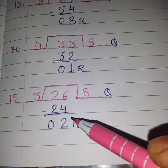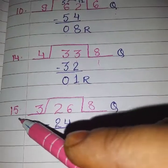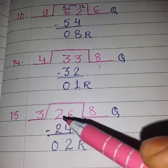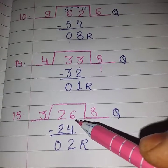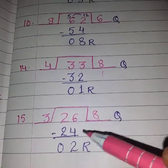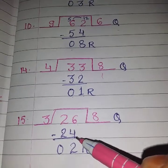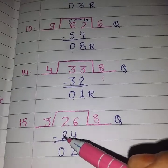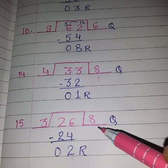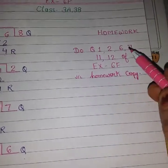This is the last classwork question — question number 15. In the table of 3, we have to find a number lesser than 26. 3 eights are 24. Now subtracting: 6 minus 4 is 2, and 2 minus 2 is 0. So 2 is the remainder and 8 is the quotient.